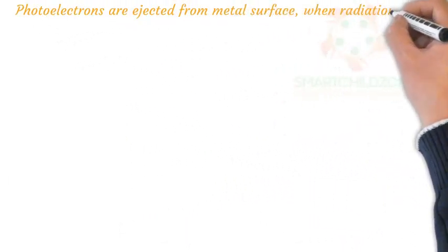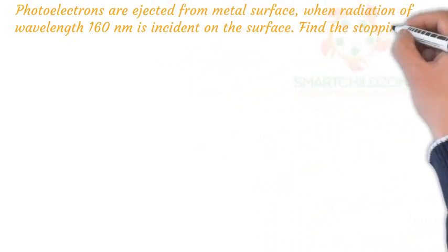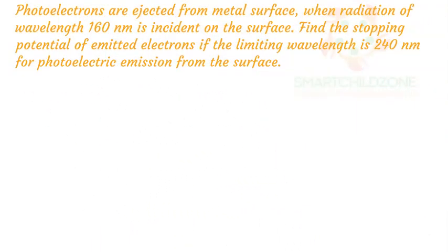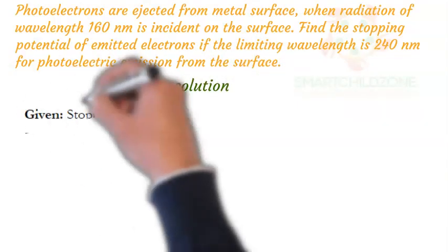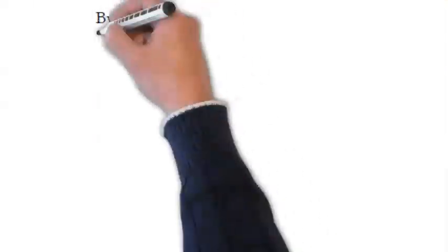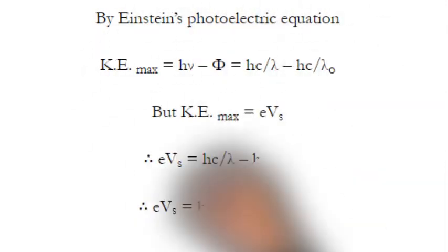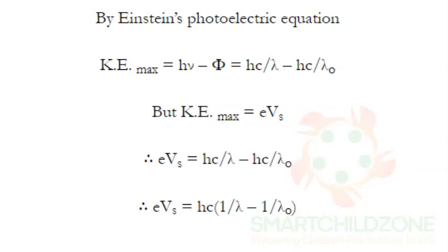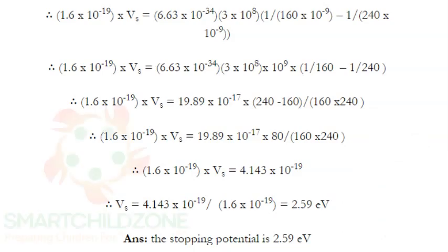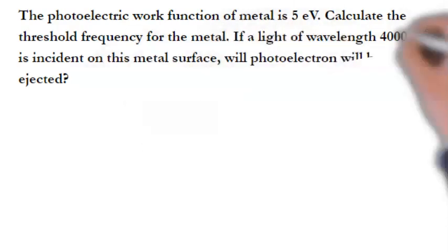Photoelectrons are ejected from a metal surface when radiation of wavelength 160 nanometers is incident on the surface. Find the stopping potential of emitted electrons if the limiting wavelength is 240 nanometers for photoelectric emission from the surface. With the information we are given, we can use the Einstein photoelectric equation to solve for the stopping potential.